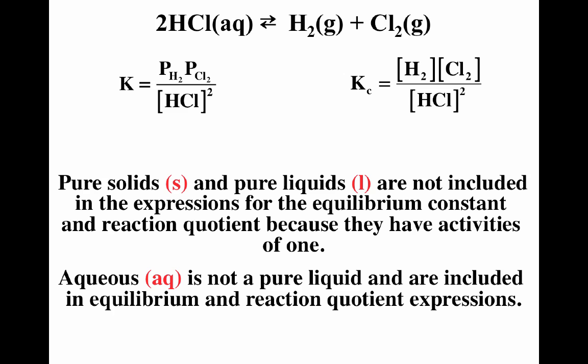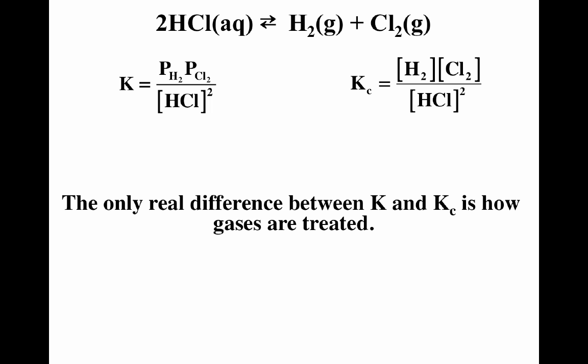For the reaction 2HCl aqueous going to H2 gas plus Cl2 gas, the thermodynamic K would be partial pressure of H2 times partial pressure of Cl2 divided by concentration of HCl squared. K sub C would be everything in terms of concentration: concentration of H2 times concentration of Cl2 divided by concentration of HCl squared. Remember: concentrations are all divided by moles per liter and partial pressures are all divided by bar — everything is unitless. The only difference between K and K sub C is how you handle the gas particles. Pure solids and pure liquids are not included in the expressions because they have activities of one. Aqueous means dissolved in water — it is not a pure liquid and so it is included in the equilibrium expression.